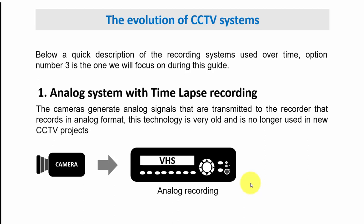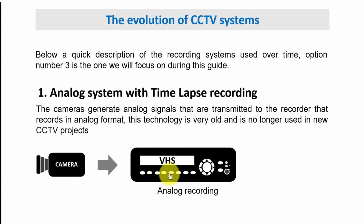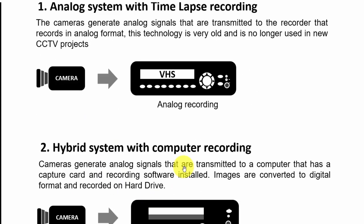In the first class we saw an analog system with time-lapse recording, where you have an analog camera recording on a VHS. It's analog to analog — you have the analog signal from the camera and that signal goes to a VHS that also records in analog format. There is no digital here.